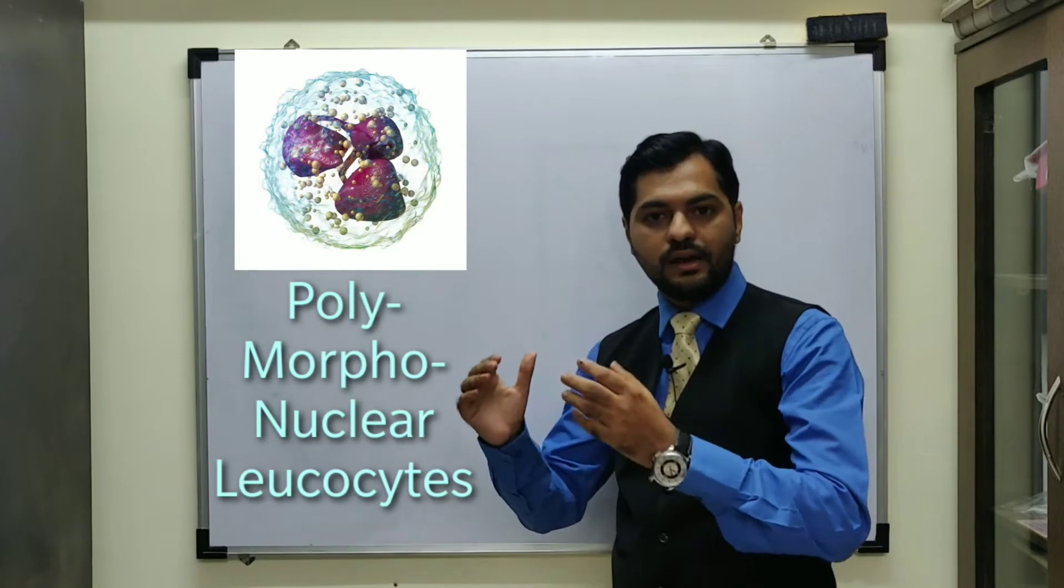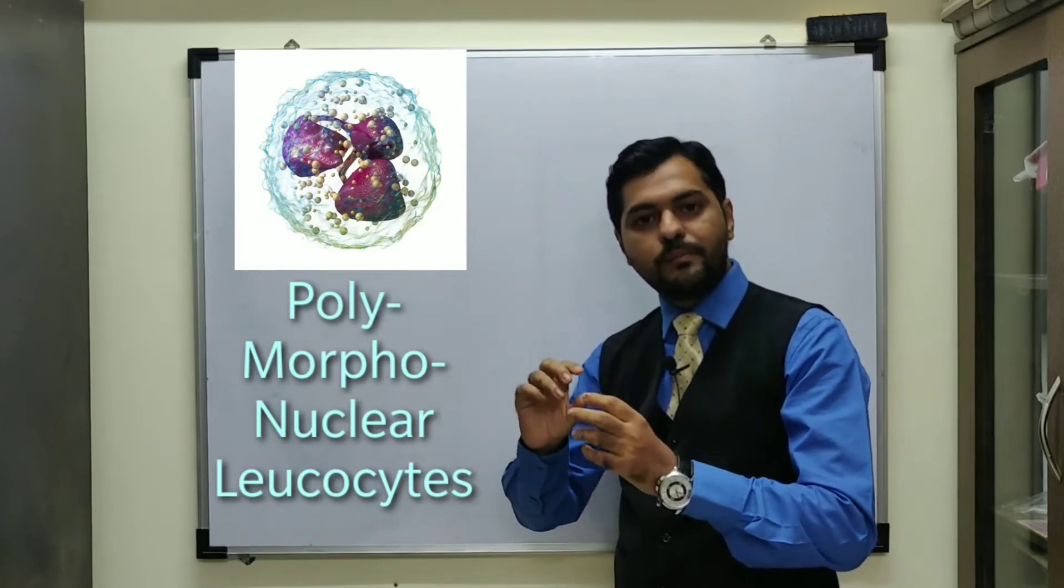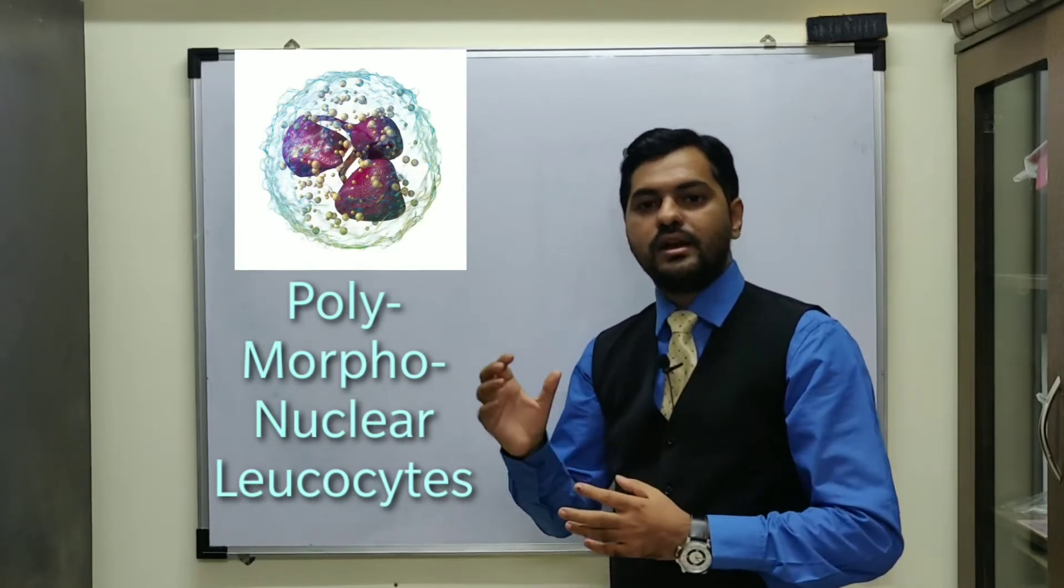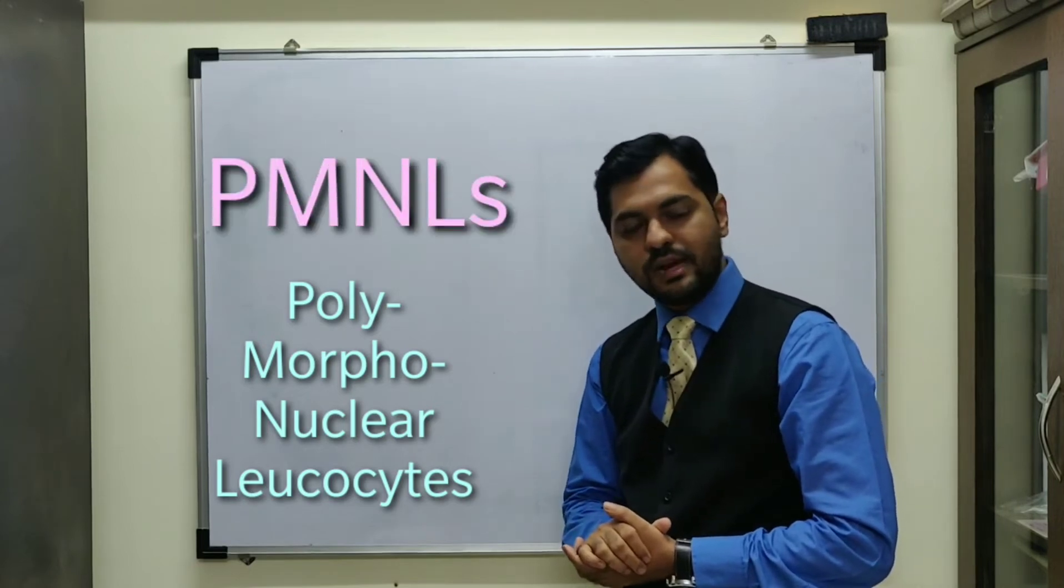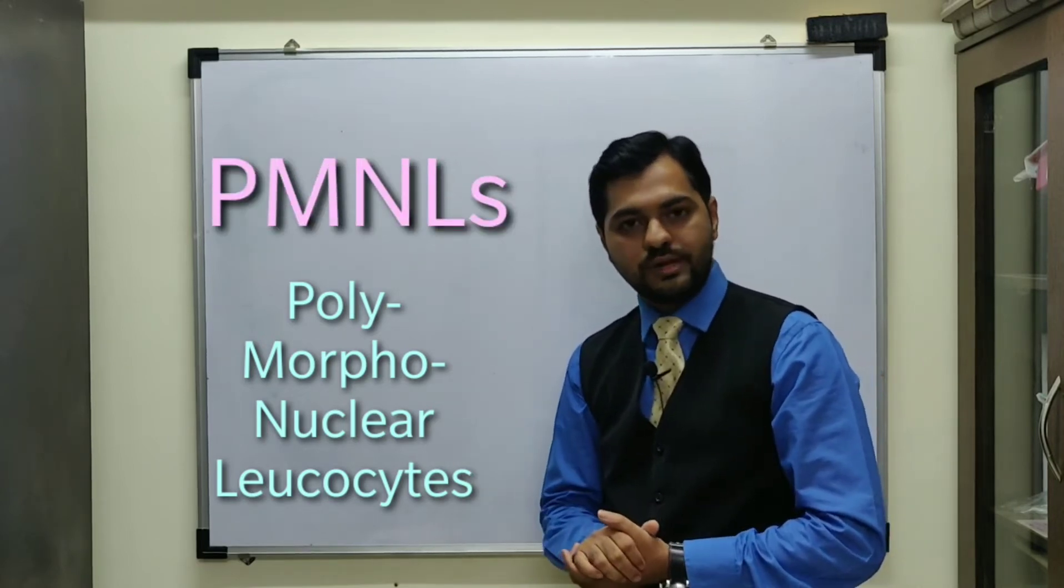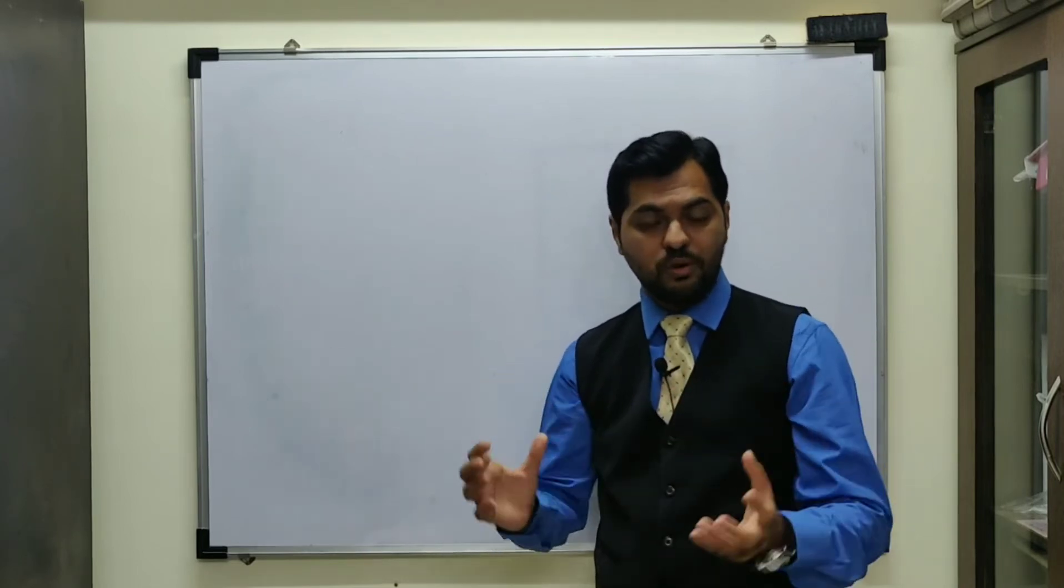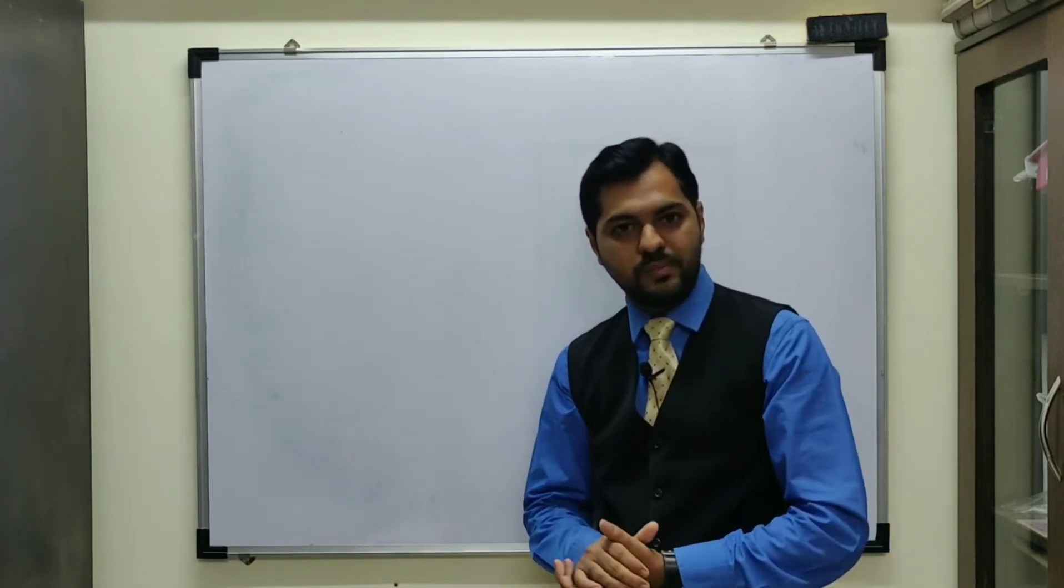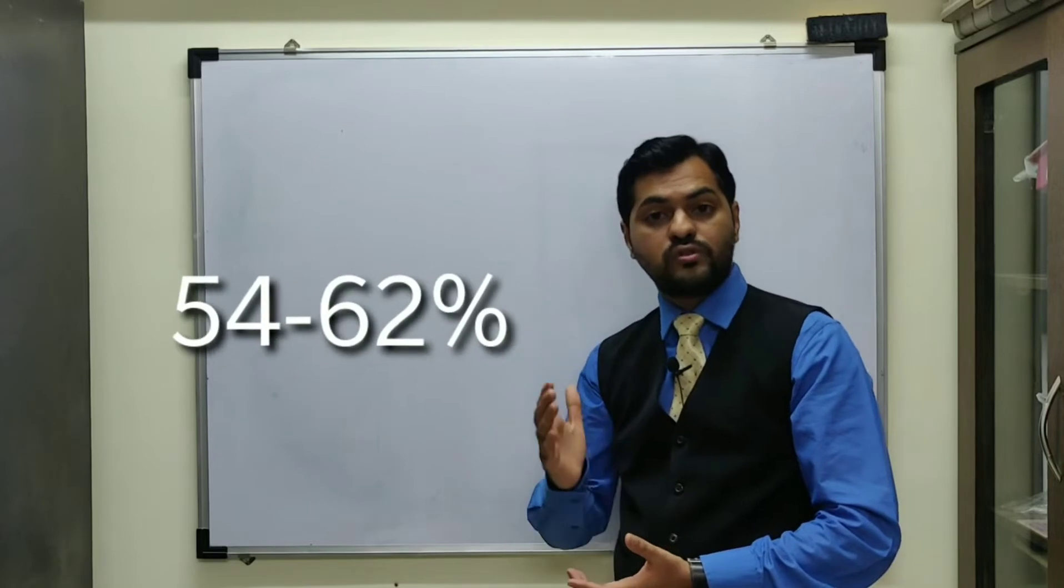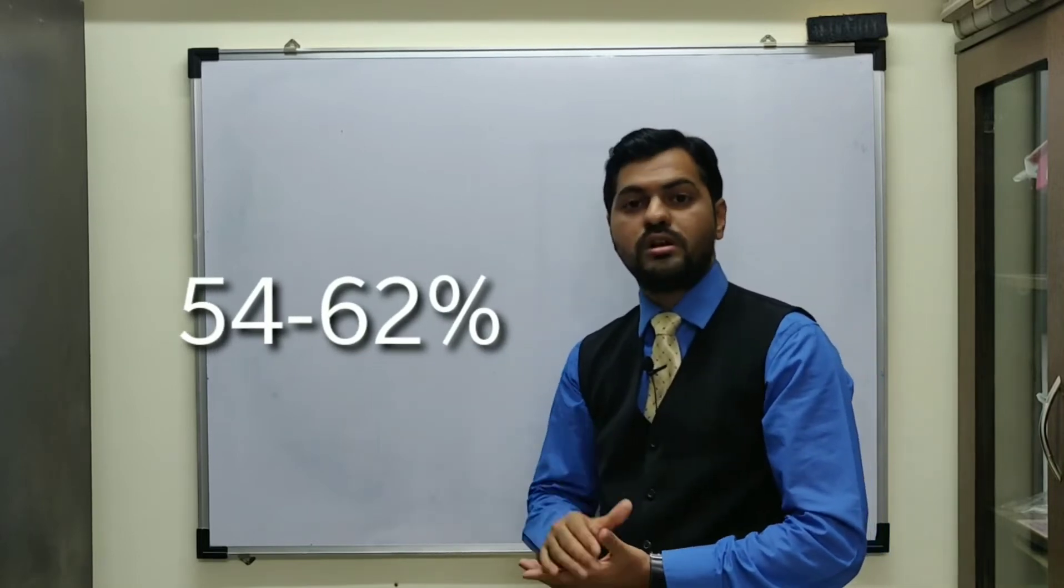Since the nucleus has different lobes, it appears polymorphic and is known as PMNL, polymorphonuclear leukocytes. In general, neutrophils concentration in the total WBC count is the maximum. They represent around 54 to 62 percent of all the total WBCs.